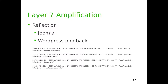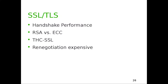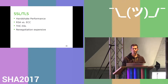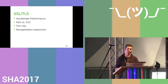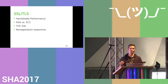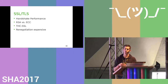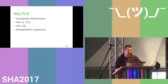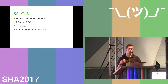SSL and TLS is important because the handshake performance is asymmetric — the server has to do more calculation than the client. There was a tool called THC-SSL that exploited this using lots of renegotiation requests, causing high CPU load. Also, RSA is really CPU-intensive, so if you're hosting a server, ECC is a better choice, and all modern browsers can handle ECC.